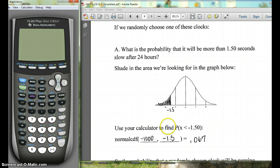Remember, slow we consider to be negative, so negative 1.5. And we want everything that's more slow than that. So we're going to the left. We want everything less than negative 1.5. So we're going to hit second vars, number 2. Now since this is a less than, we're going to put negative 1,000 here. And we're going to put negative 1.5, going up to negative 1.5. Since this is the standard normal, we'll leave these alone, and we'll hit paste.